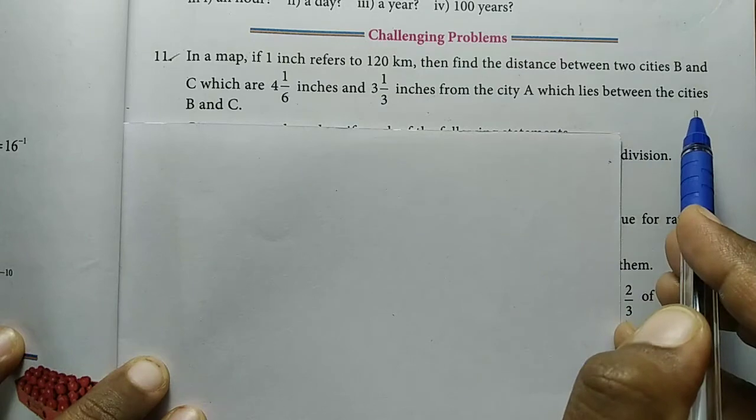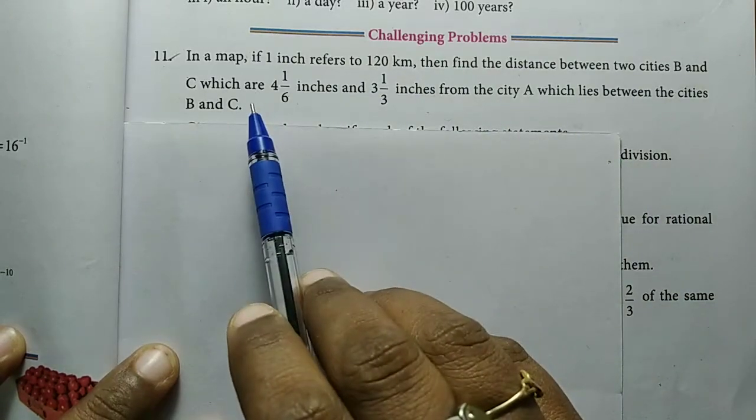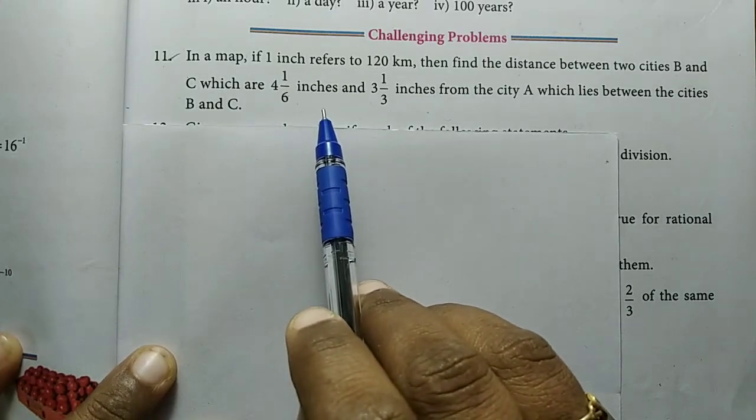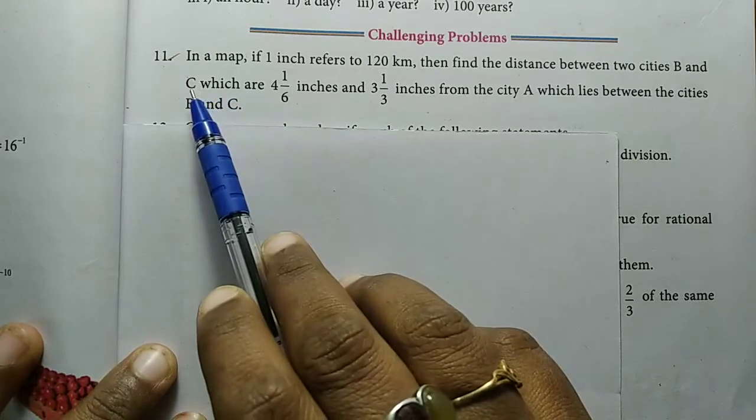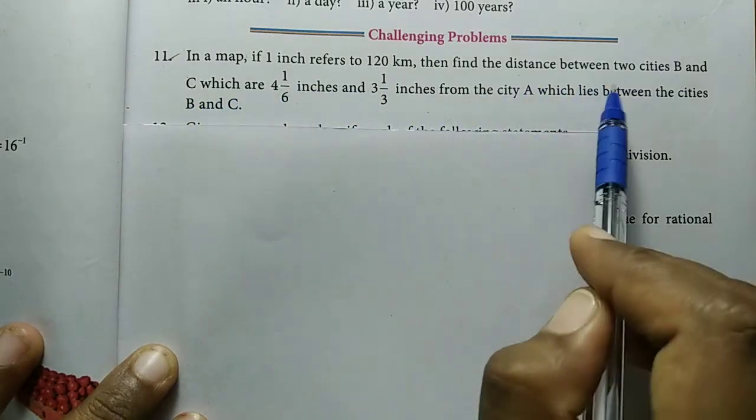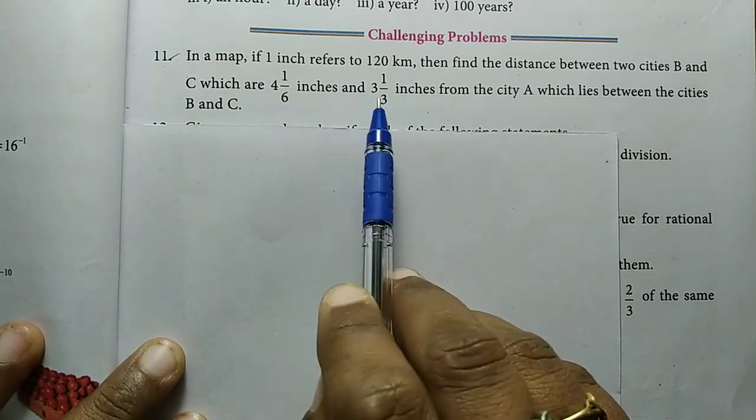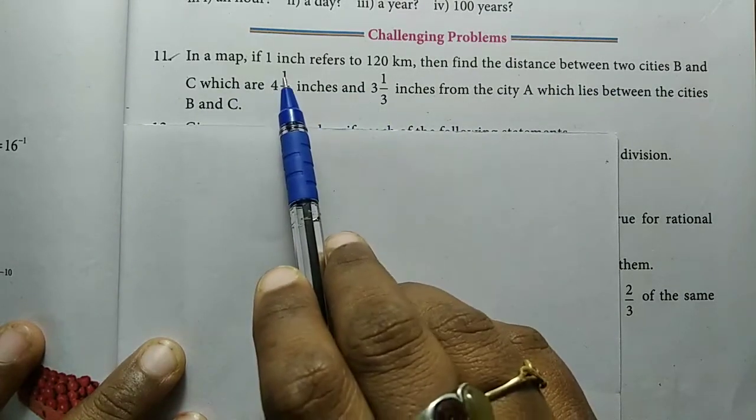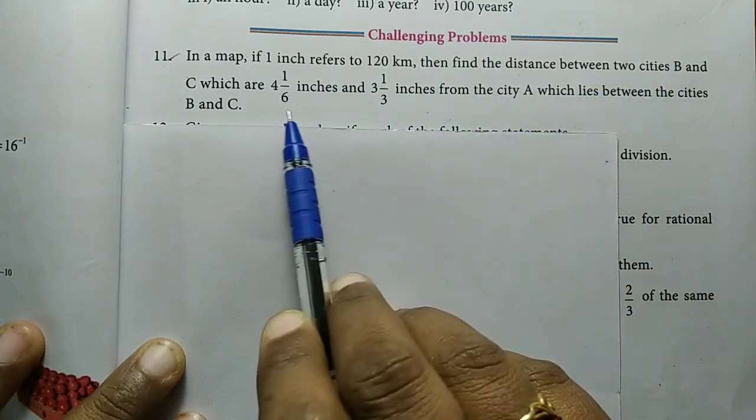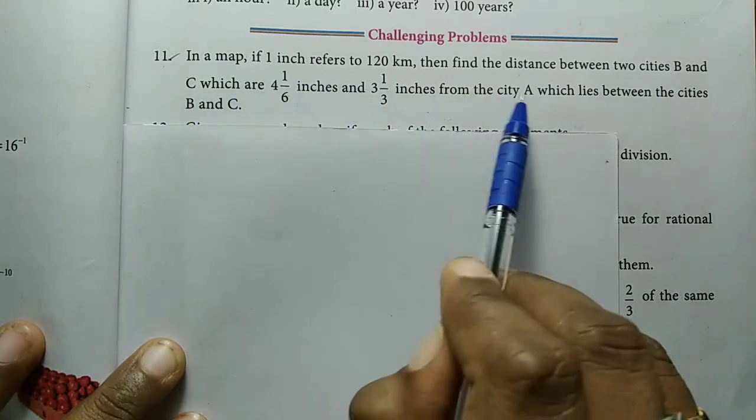So here, one map has three cities A, B, and C. Distance information is given. We need to find the distance between two cities. The measurement is given: B city is 4 1/6 inches from A, and C city is 3 1/3 inches from A.